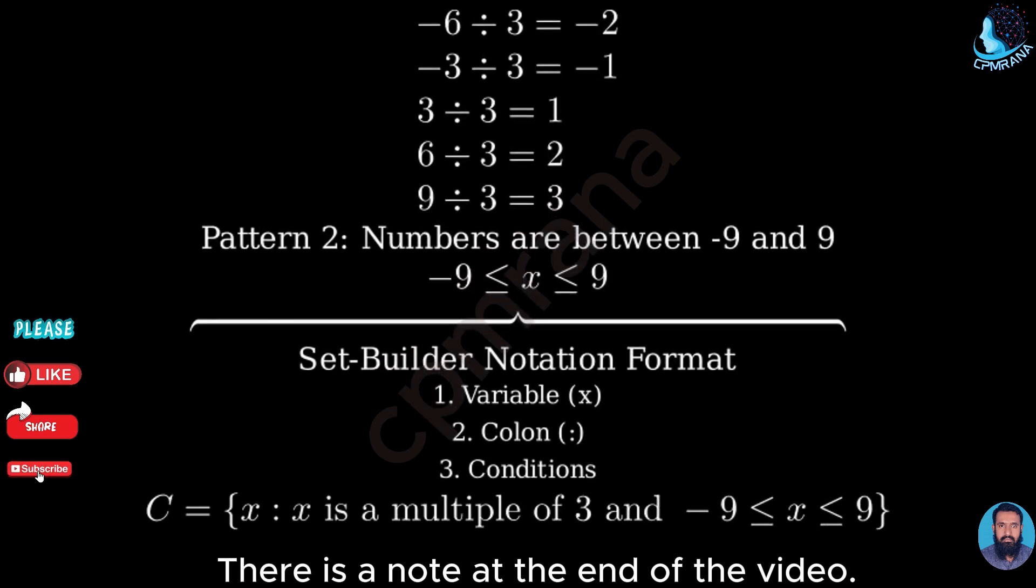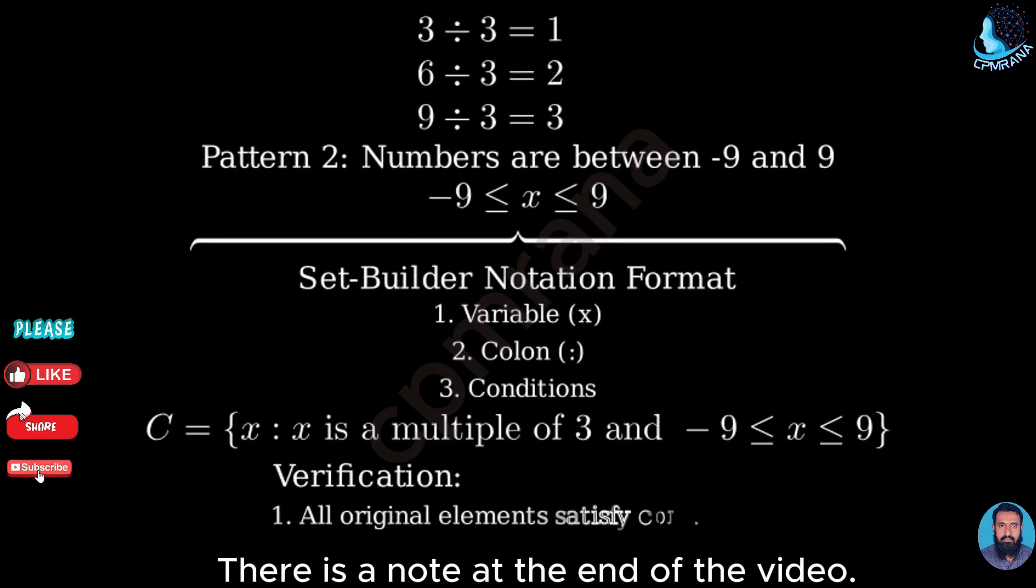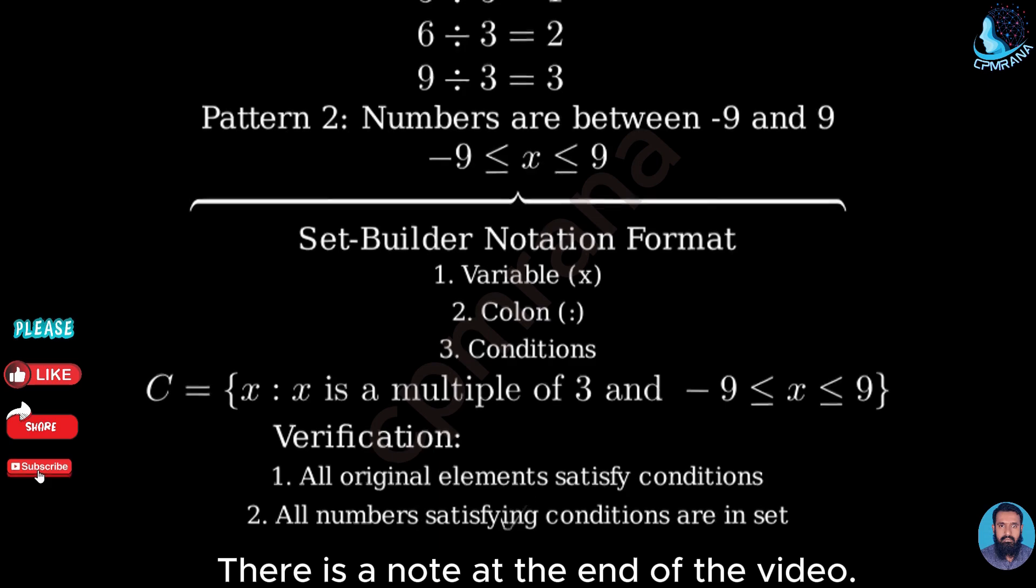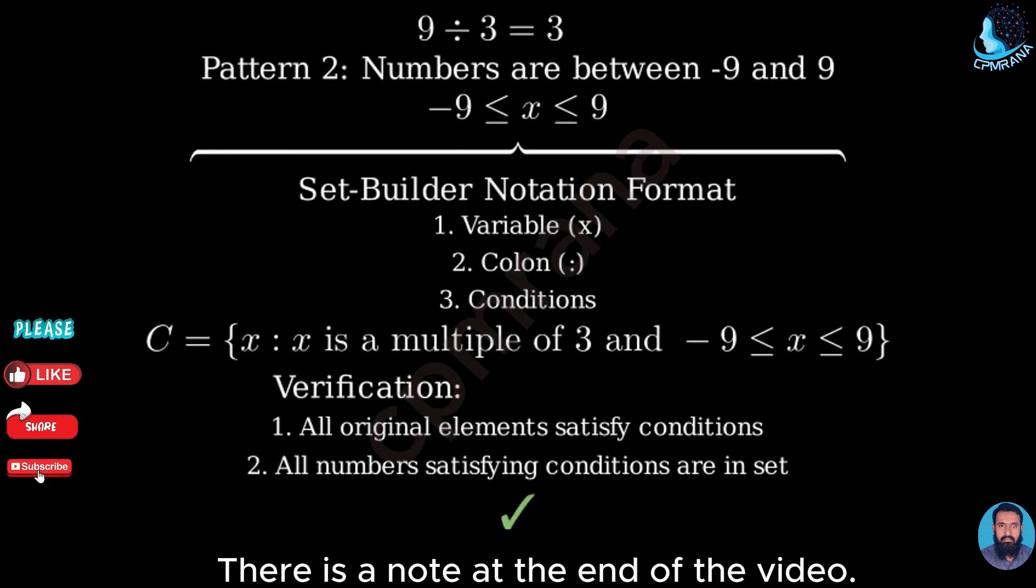To verify this is correct, let's check that one, every element in our original set satisfies these conditions, and two, every number that satisfies these conditions is in our original set. Since both these conditions are met, our set-builder notation is correct.